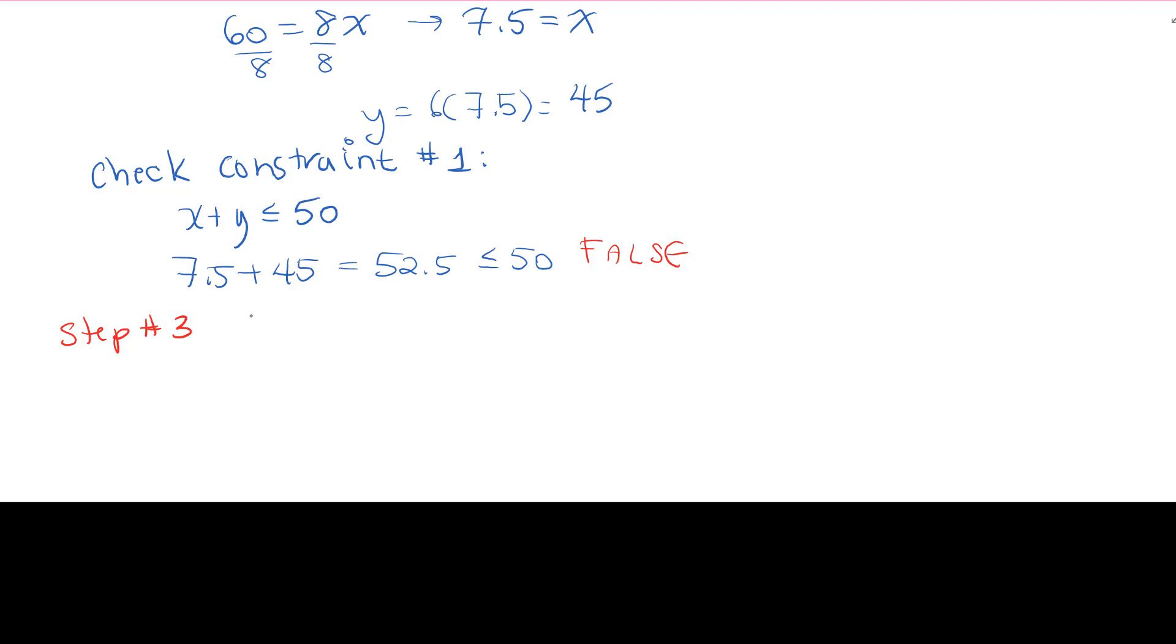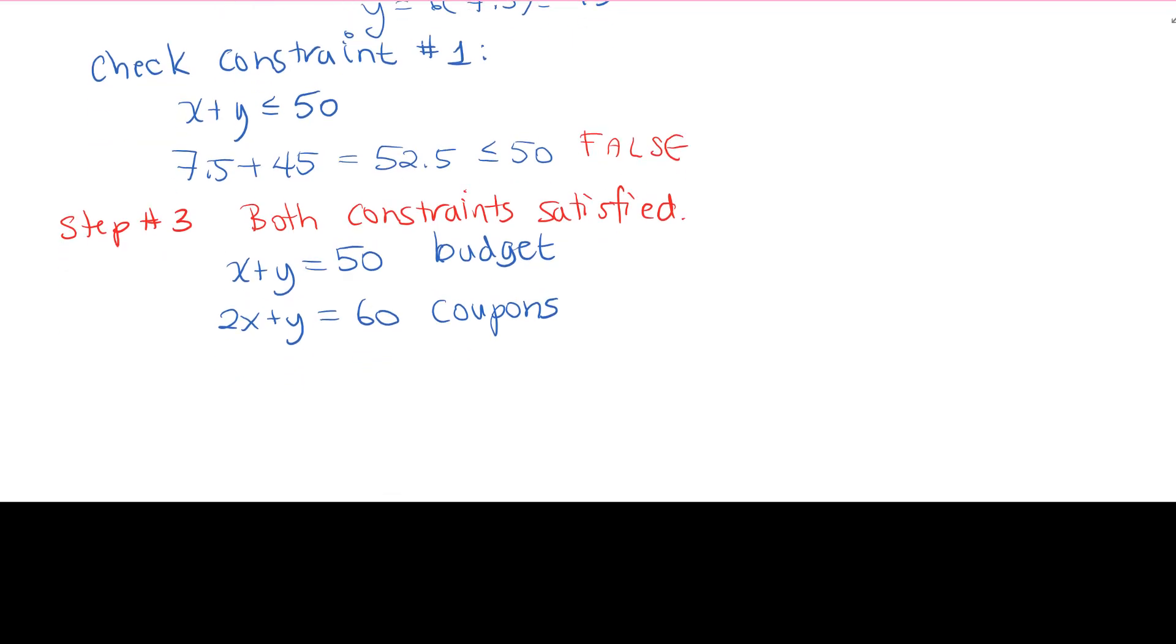Where we assume both constraints are satisfied. What that gives us is that x plus y is all the way at the limit at 50. And 2x plus y is all the way at the limit at 60. They are both binding, if you will.